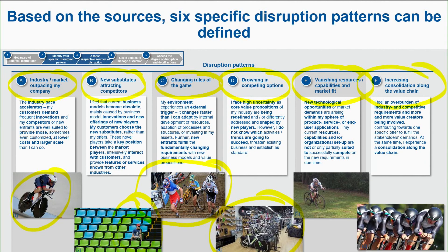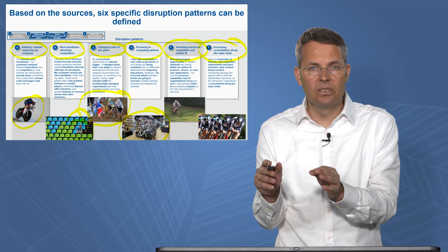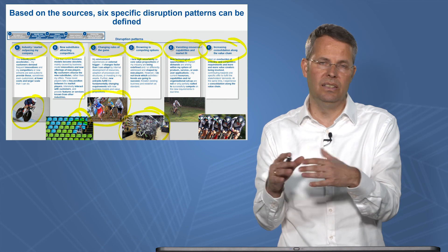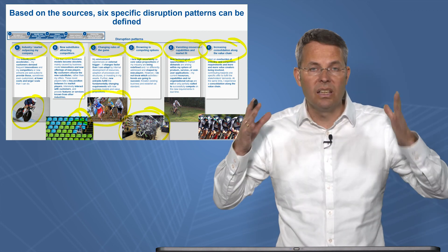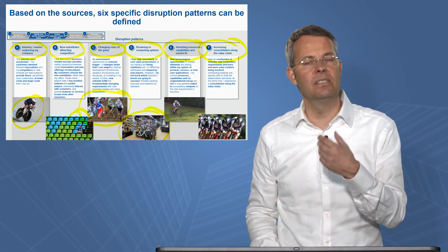The sixth pattern is increasing consolidation along the value chain. For instance, insurance companies that sell car insurance try to offer more along the value chain — some have car repair companies or contracts with repair shops, consolidating their position along the value chain.